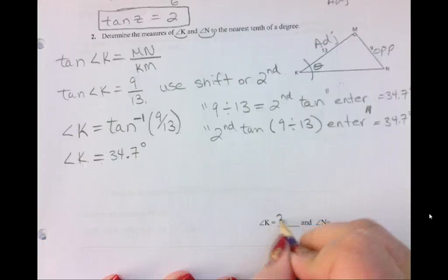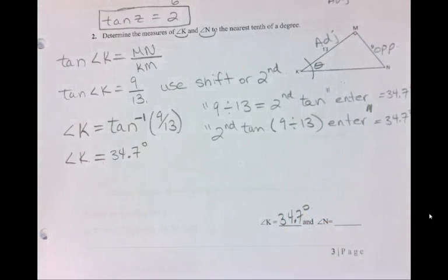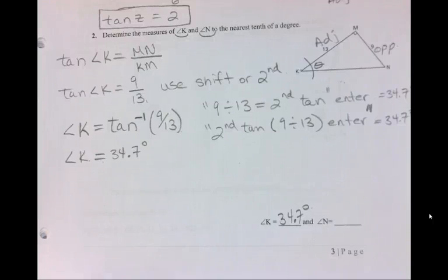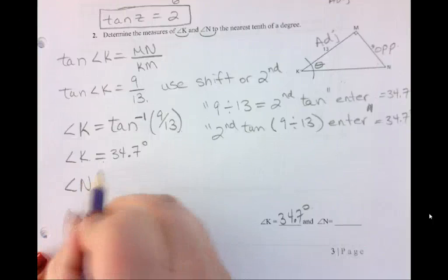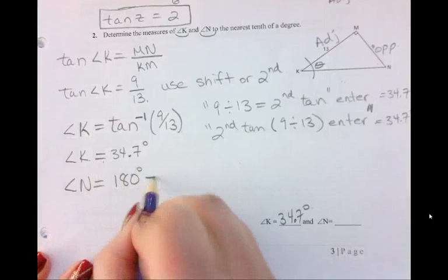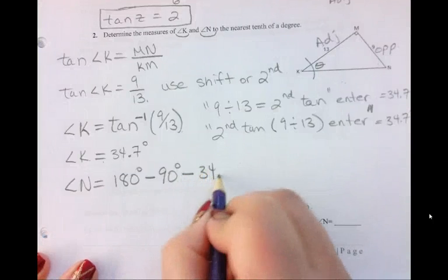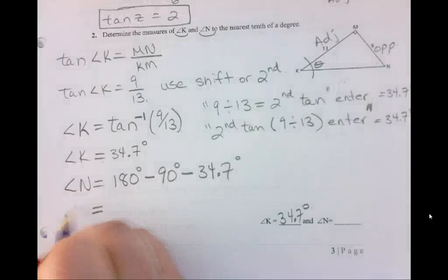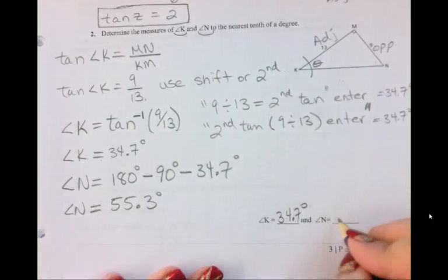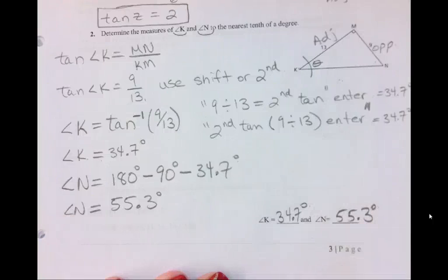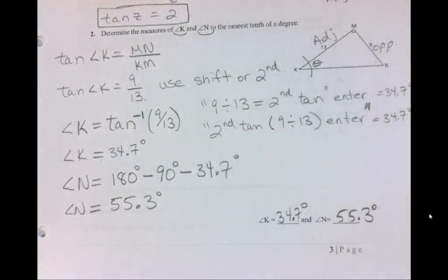Now let's very quickly see if we can figure out angle N. How would we use the information we have so far to figure out angle N? So angle N, we say 180 degrees minus 90 degrees minus 34.7 degrees. And that equals 55.3 degrees. So that's the fastest way to figure out angle N. Are there other ways that we can figure it out? Sure there is. But that's kind of the quickest way.